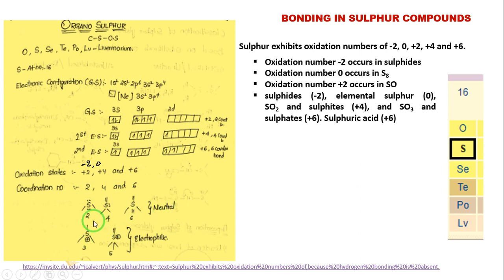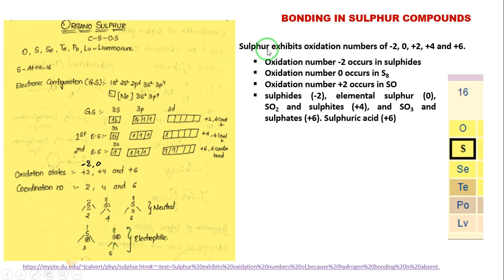For example, if sulfur has 3 bonds, you will get a positive charge on sulfur. If sulfur has 5 bonds, the sulfur also has a positive charge on it. Finally, sulfur can exhibit different kinds of oxidation numbers: −2, 0, +2, +4, and +6.